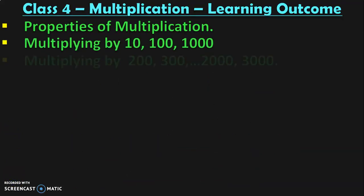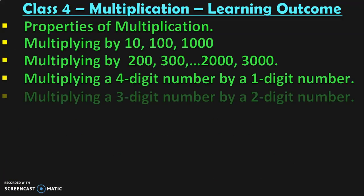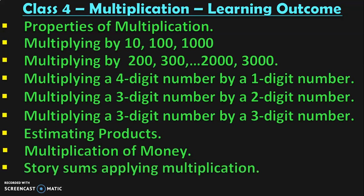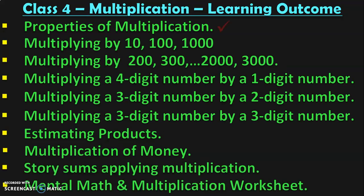Dear viewers, these are all the learning outcomes in class 4 under the topic multiplication. I have covered the first topic — properties of multiplication — in a separate video; the link is given below in the description box. In this video we saw multiplication by 10, 100, and 1,000. In the upcoming videos we will be seeing multiplication by 200, 300, 2,000, 3,000 and so on.